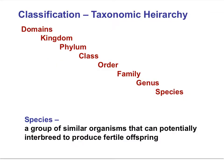Here is the taxonomic hierarchy — from domain, the broadest most inclusive group, to species, the most specific. We have domain, kingdom, phylum, class, order, family, genus, species. A helpful mnemonic: 'Doubtful King Philip came over from Great Spain.'